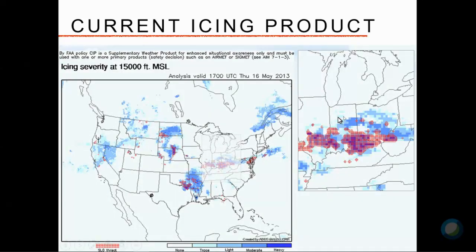The SLD overlay appears as a red hatched area on the chart. On the convection further south, there's definitely a large region showing SLD, as expected from the convective threat. Even further north in the area we were looking at, there are a few spots with SLD threats. Importantly, this chart shows SLD even if there's only a 5% or greater chance — any signatures at all trigger the indicator. It's not a calibrated probability, but it does show that SLD is possible.